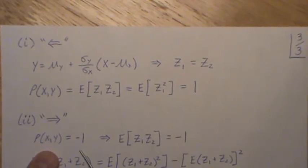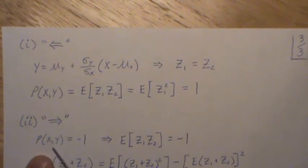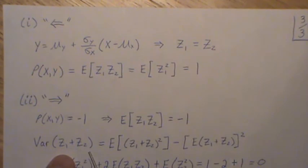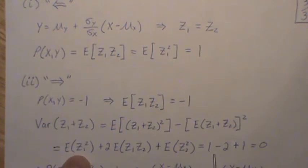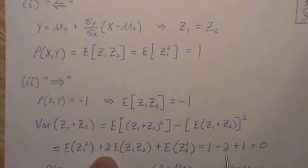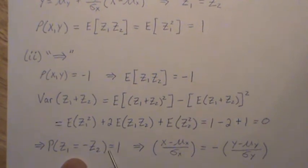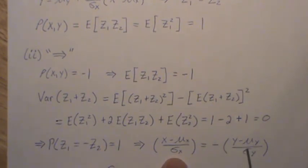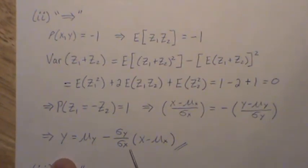For part 2 we assume the correlation is minus 1. That implies E[z1·z2] equals minus 1, because this is equivalent to correlation. Now let's look at the variance of (z1 plus z2). Expanding the quadratic and distributing the expected value signs: this is 1, this piece is 1, and the cross term is minus 2. So 1 plus 1 minus 2 is 0, which implies with probability 1 that z1 equals minus z2. Multiplying the standard deviation across and adding the mean gives us the exact linear relationship between x and y with a negative slope.